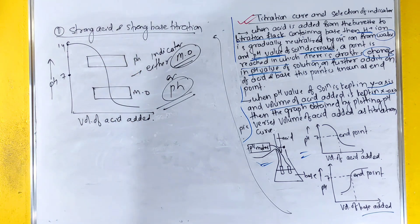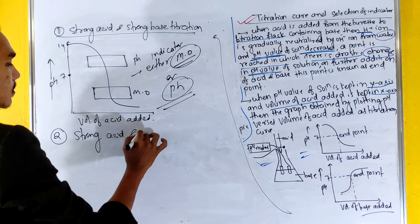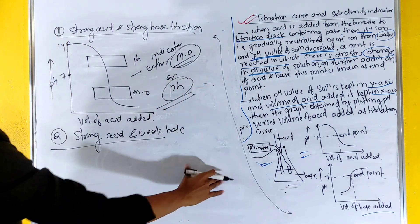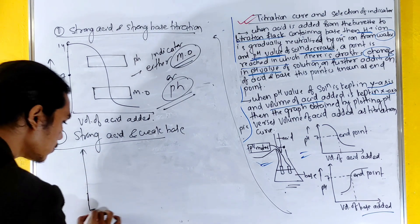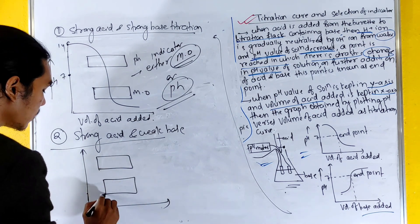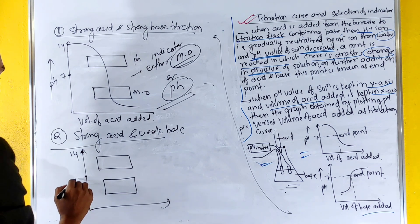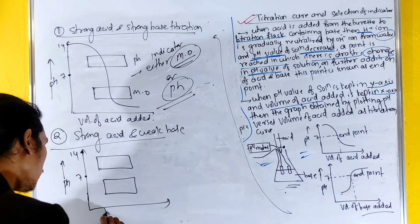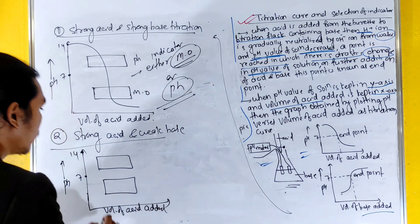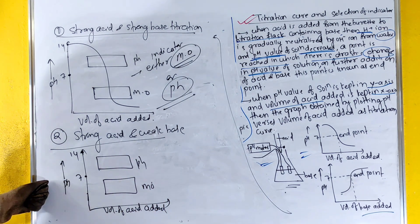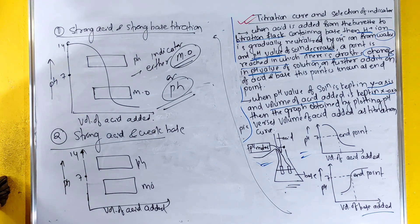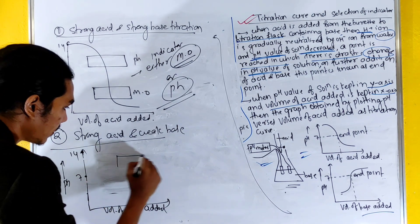For strong acid and weak base titration, the graph is different. In this case, the pH at the equivalence point is around 7 or less. The volume of acid added is plotted, and methyl orange is the appropriate indicator to use for this case.